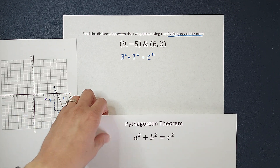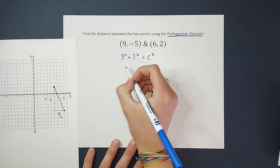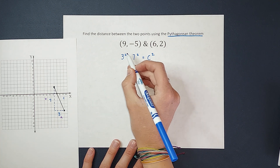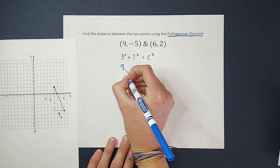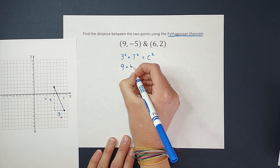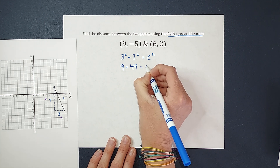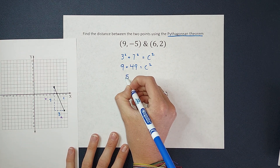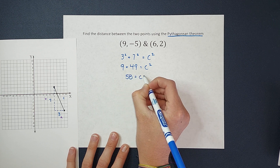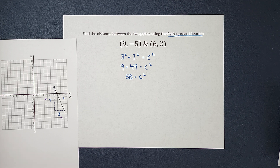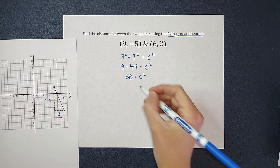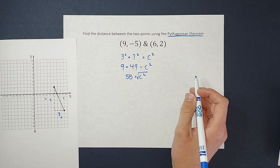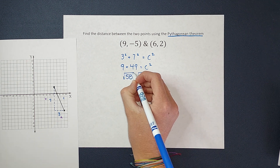My whole goal is to get c by itself. So I'm going to simplify this down. 3 squared is 3 times 3, which gives me 9, plus 7 squared gives me 49, and we are still equal to c squared. 9 plus 49 gives me 58, equal to c squared. To get rid of the squared on c, I take the square root of both sides to keep it balanced.